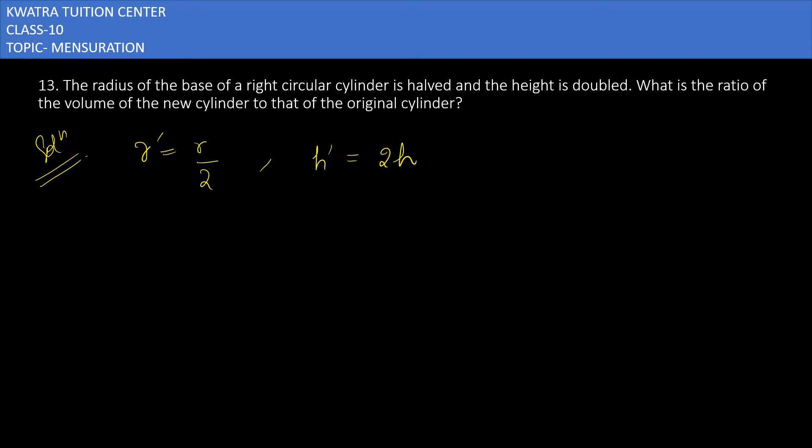Volume of new cylinder: substituting the values, it will be π(r/2)² × 2h, which equals π r² over 4 times 2h. The 2 and 4 can be cancelled, so this gives us π r²h over 2.